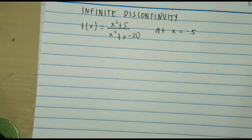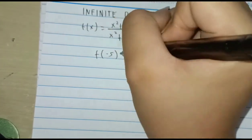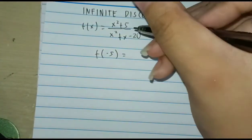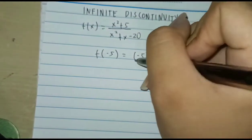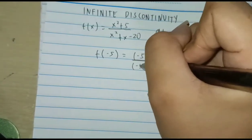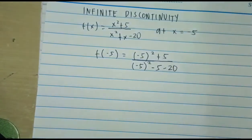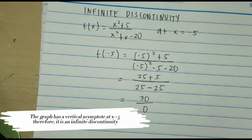Then, the infinite discontinuity example. f of x equals x squared plus 5 over x squared plus x minus 20, at x equals negative 5. We substitute negative 5 for all x values, giving negative 5 squared plus 5 over negative 5 squared minus 5 minus 20. This becomes 25 plus 5 over 25 minus 25, which equals 30 over 0, which is undefined.